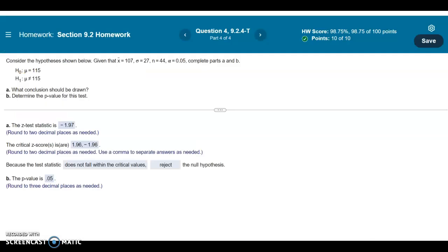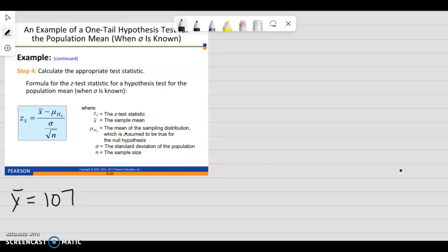And then, up here, our standard deviation is 27, n is 44, alpha is 0.05. So I'm going to write all that down, and our population standard deviation was 27.